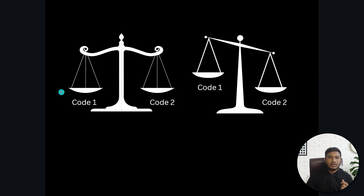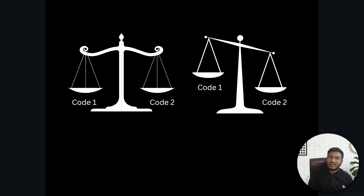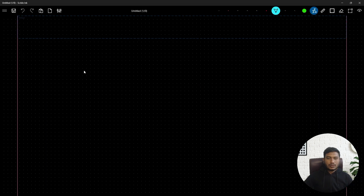Both codes give the same output, but you need to decide which code is better and which will execute faster. You might think of setting a timer to measure the time of these two codes, and whichever executes faster would be considered the more efficient code — the more efficient algorithm.